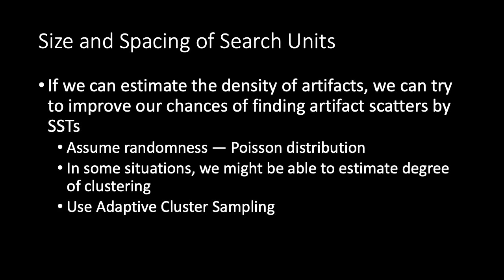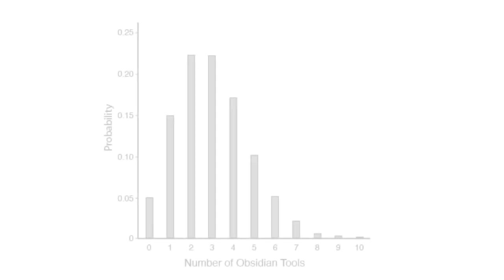In fact, if we have some basis for estimating the density of artifacts in an area we're about to survey, we can use this information to optimize the size and spacing of our shovel tests. In that event, one option is to assume that the artifacts are randomly distributed within the space, in which case we can use the Poisson distribution as a guide.